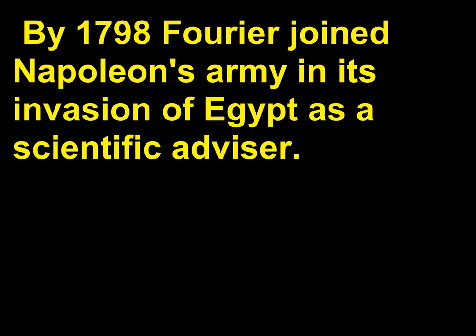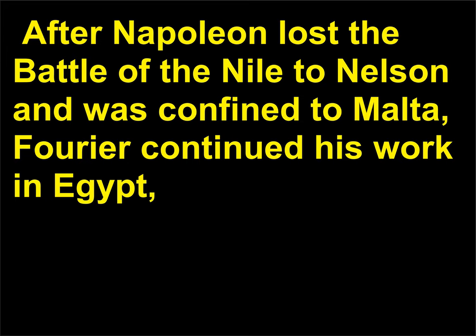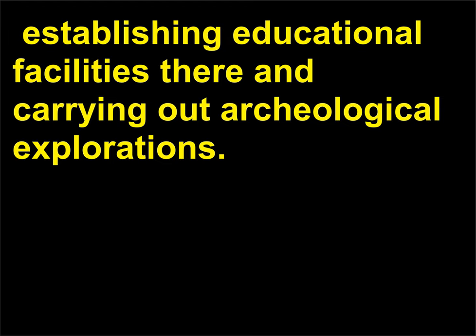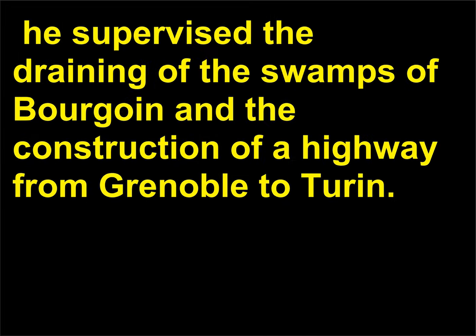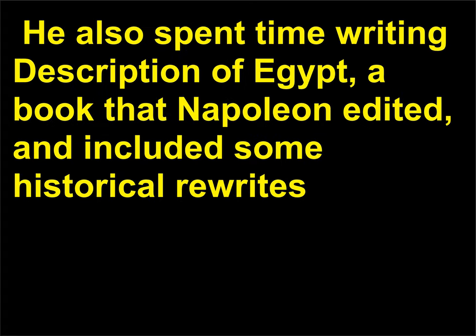By 1798 Fourier joined Napoleon's army in its invasion of Egypt as a scientific advisor. After Napoleon lost the Battle of the Nile to Nelson and was confined to Malta, Fourier continued his work in Egypt, establishing educational facilities there and carrying out archaeological explorations. Back in France with Napoleon in 1801, he supervised the draining of the swamps of Bourgoin and the construction of a highway from Grenoble to Turin. He also spent time writing Description of Egypt, a book that Napoleon edited.